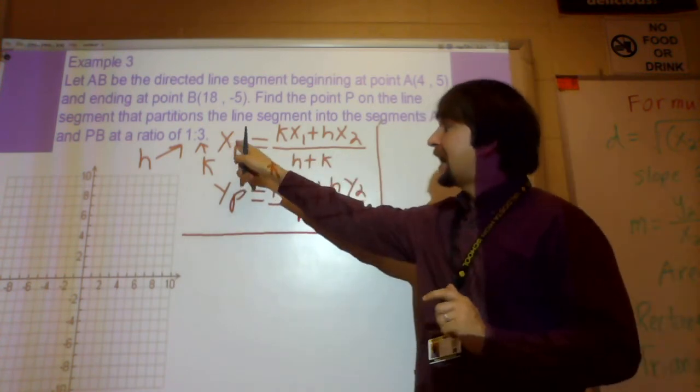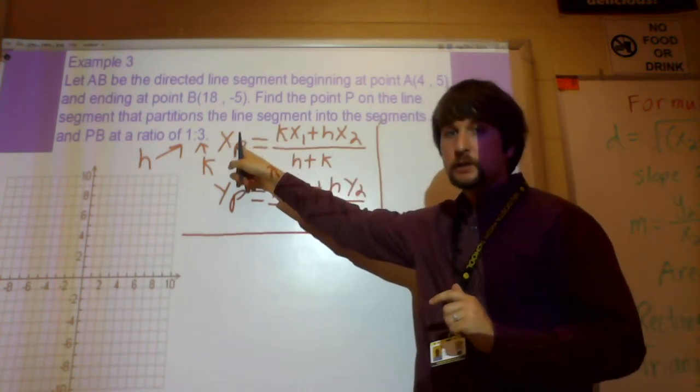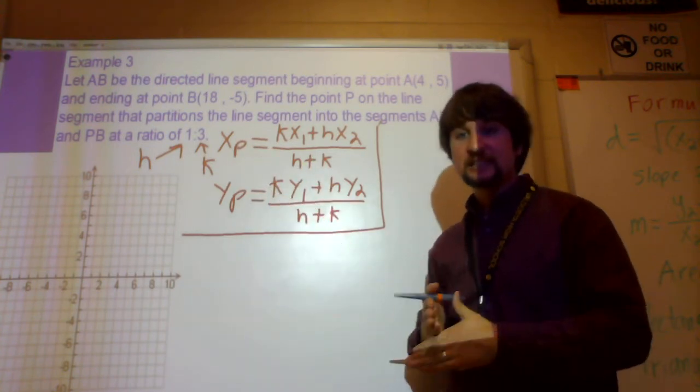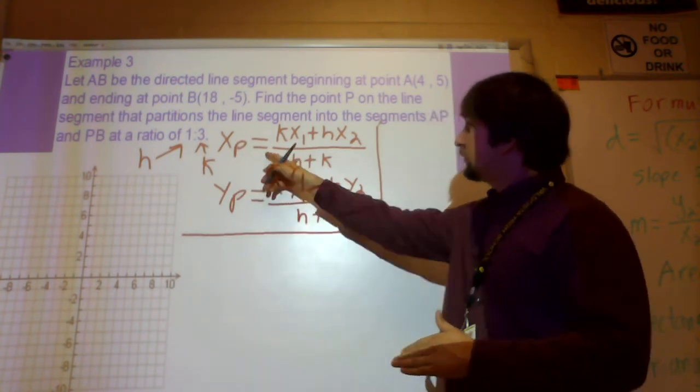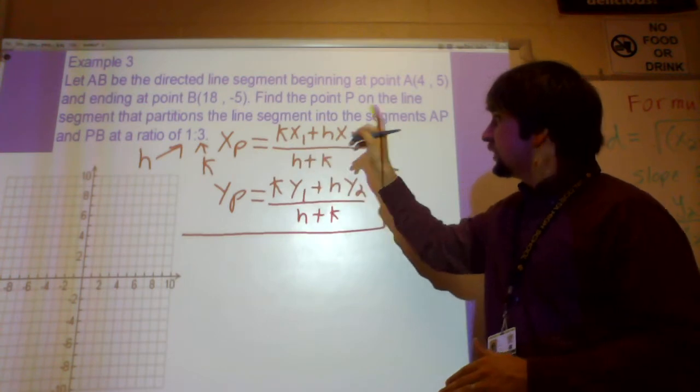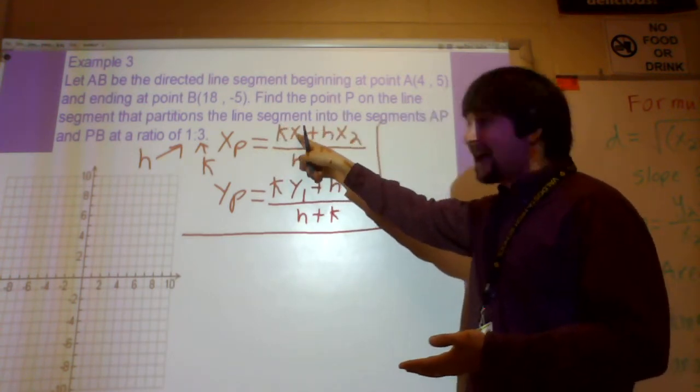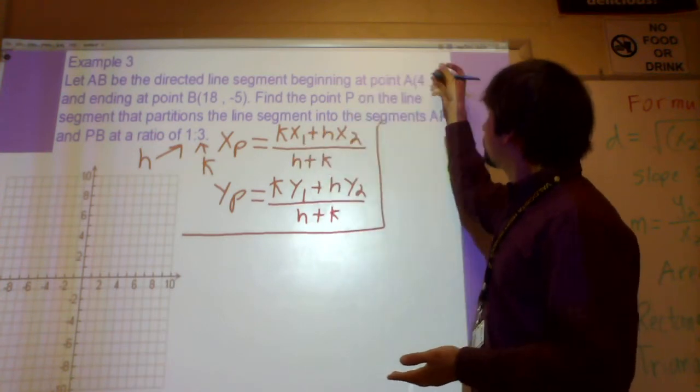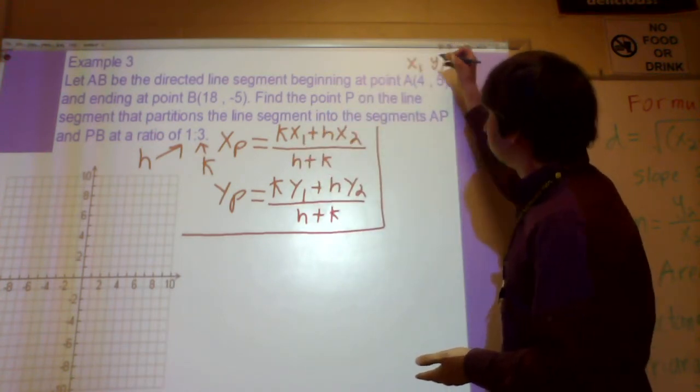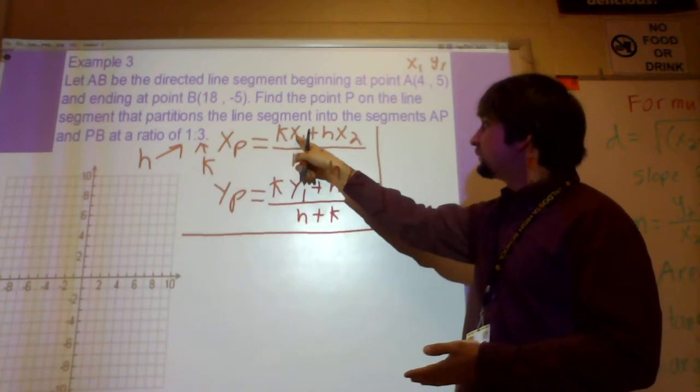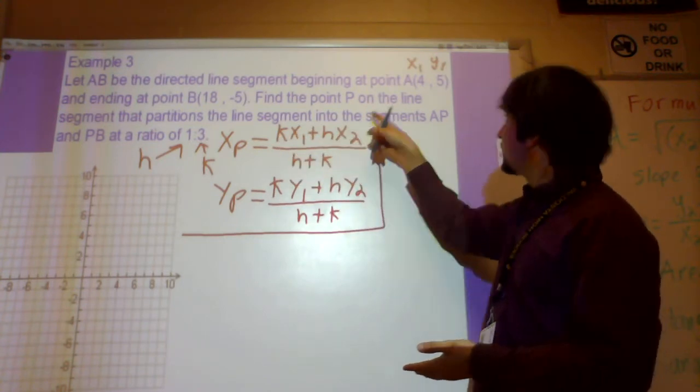If you want to find the X component of that point that partitions the line segment, then here's the formula. It's K, sorry, it's K times X1, where X1 would be this first point, and this would be Y1 by the way. So it's K times X1 plus H times X2.